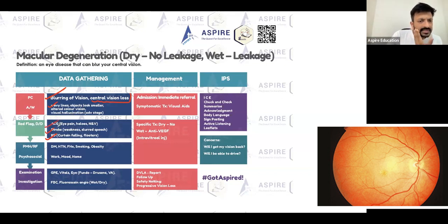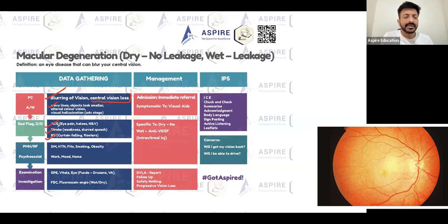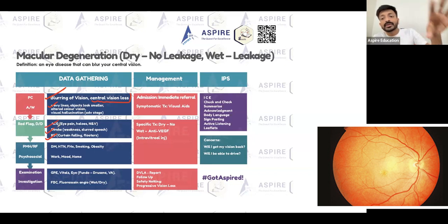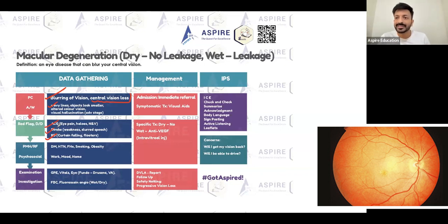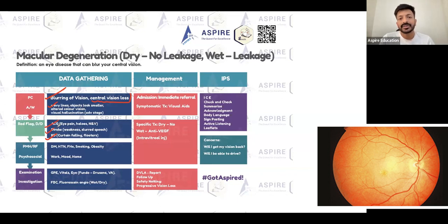Glaucoma is also a differential — eye pain and color halos can be a differentiating feature. Whenever you get this kind of condition, you need to rule out something severe, something sinister. That is the main priority.